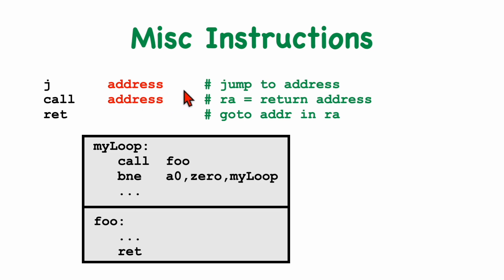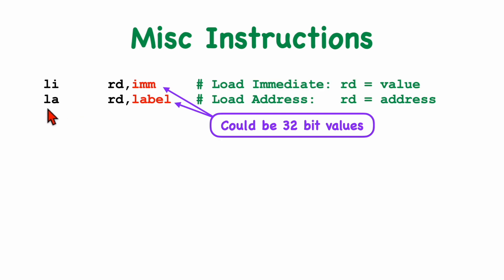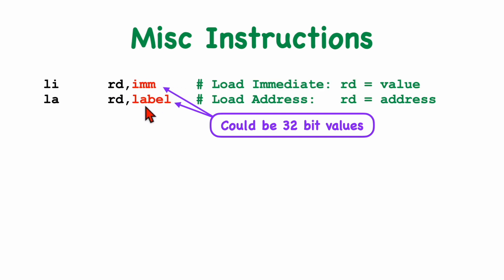Let's look at two other important pseudo-instructions: LI, or load immediate, and LA, or load address. Both move a value into a destination register. Load immediate moves an integer value known at assembly time into the destination register, while load address moves a memory address into a register. Both are pseudo-instructions that will be translated into one or more machine instructions depending on the actual value, which could be a 32-bit value.